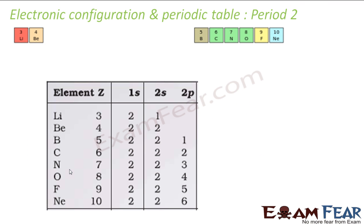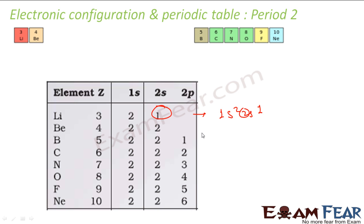If you are talking about period 2, it has lithium, beryllium, boron, carbon, nitrogen, oxygen, fluorine, and neon. For lithium, the value of n is 2. Its configuration is 1s2, 2s1. So the maximum value of n is 2.